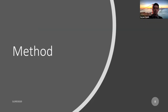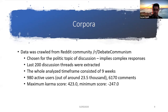Moving forward to the method, we will talk about the corpus of data used for our experiments and the whole pipeline we built, starting from data crawling up to feeding data to the machine learning models. As a corpus, we crawled data from a Reddit community called Debate Communism, mostly chosen for its political topic of discussion, which we argue implies more complex responses from users. The size of the community was medium to large, giving us a lot of conversations to work with.